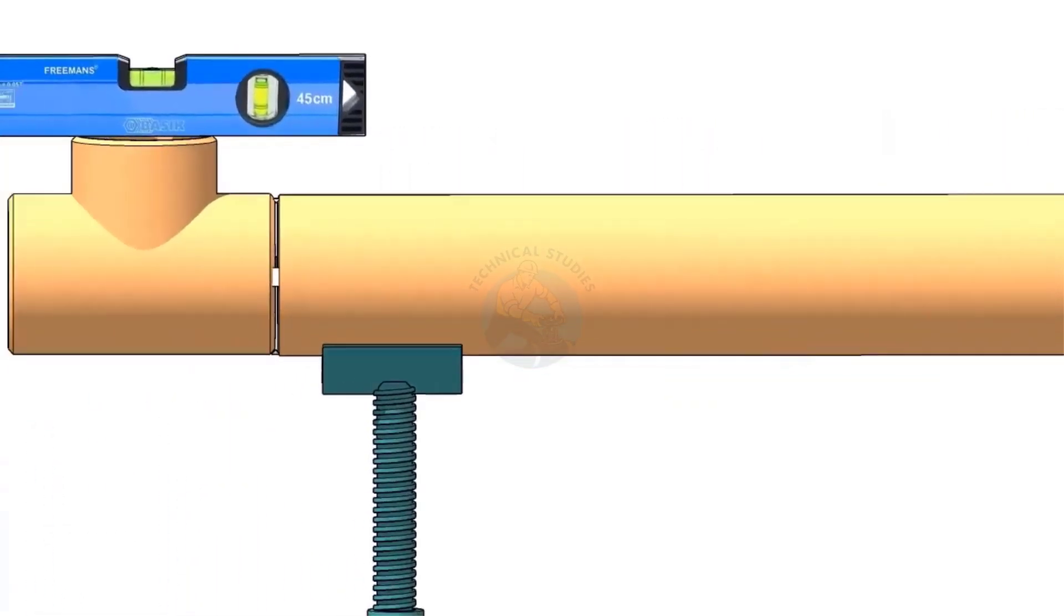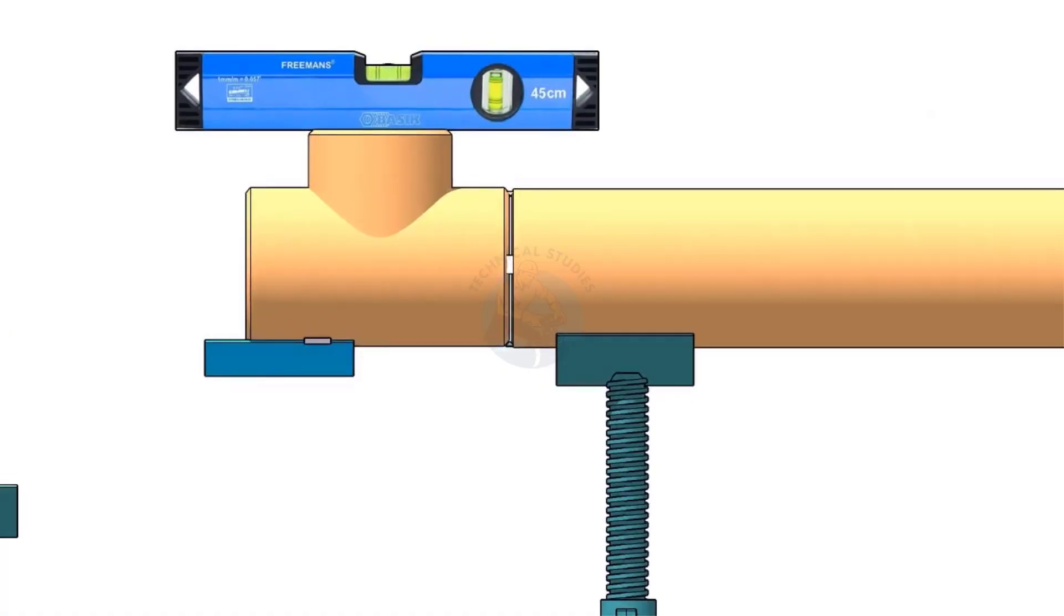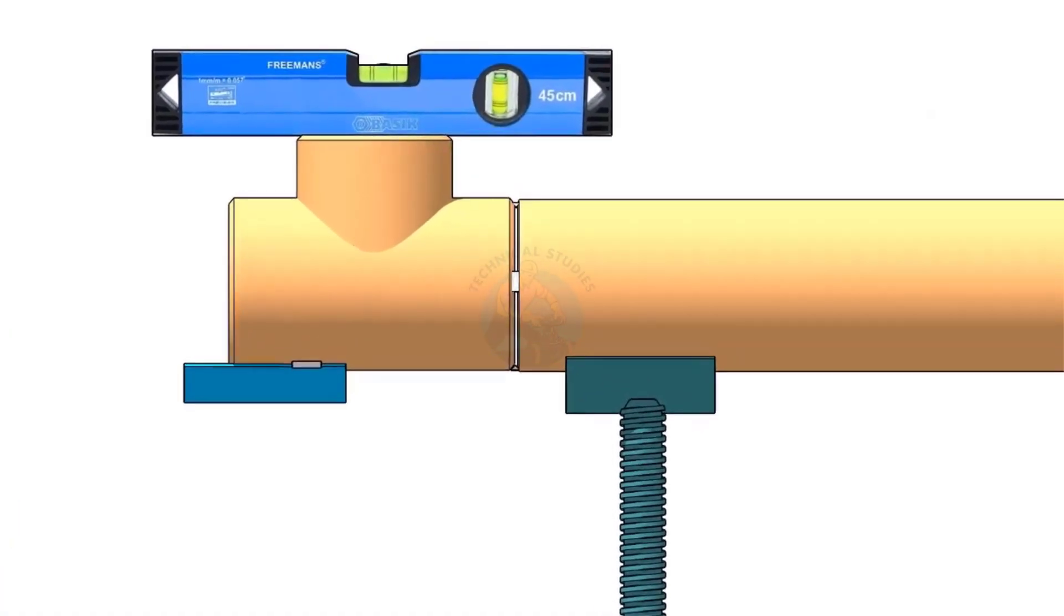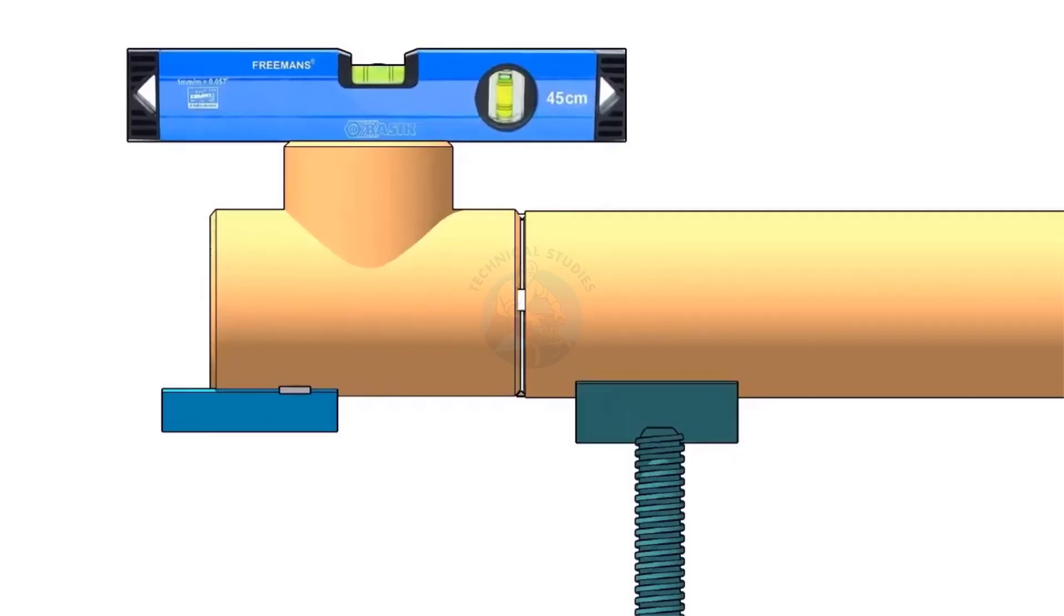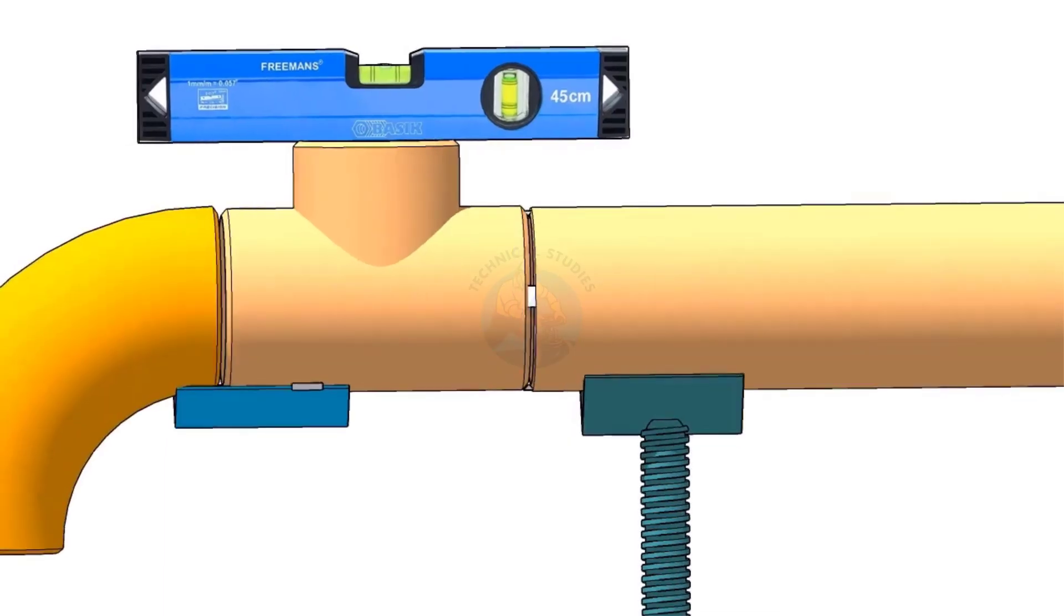Tack weld a piece of angle below the tee if you don't have a readymade pipe clamp. The size of the angle cleat may vary according to the size of the elbow. Here I am using a 50 into 50 angle because the pipe size is 6 inch. Put the elbow on the angle cleat.